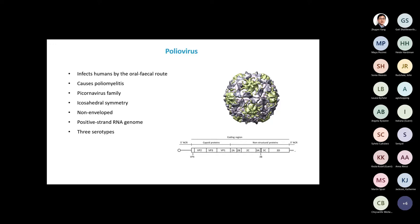Poliomyelitis causes severe paralysis, in many cases permanent. It is part of the Picornaviridae family, has icosahedral symmetry, is a non-enveloped virus, and has a positive-strand RNA genome of approximately 7,500 nucleotides. The genome structure is shown here with a capsid region and non-structural protein region, and there are three serotypes named one, two, and three.